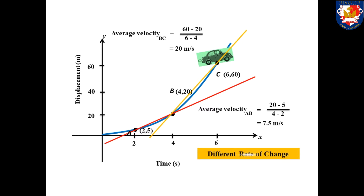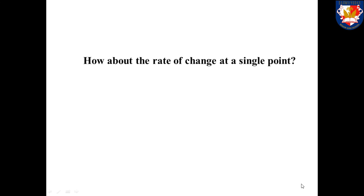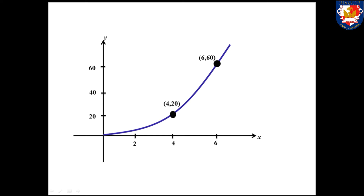We have now seen how to calculate the rate of change when given two points or more. But how about the rate of change at a single point? To answer this question, we look at this following graph, where we have been given two points: (4, 20) and (6, 60). The idea to find the rate of change comes from the average rate of change. Suppose that we are going to find the rate of change at the single point indicated by the arrow, which is (4, 20). The average rate of change between the two points shown in the graph is 20.